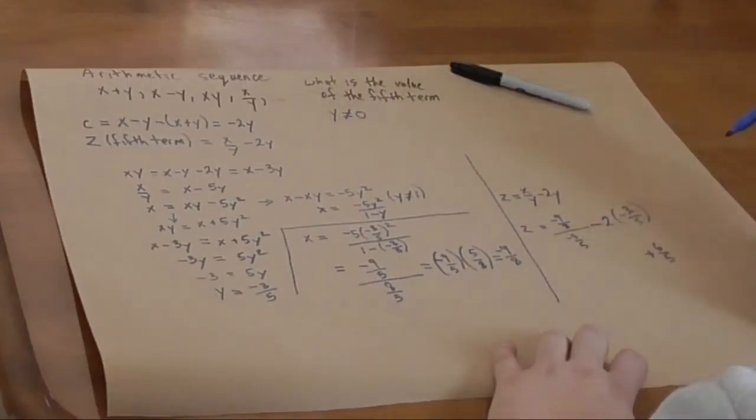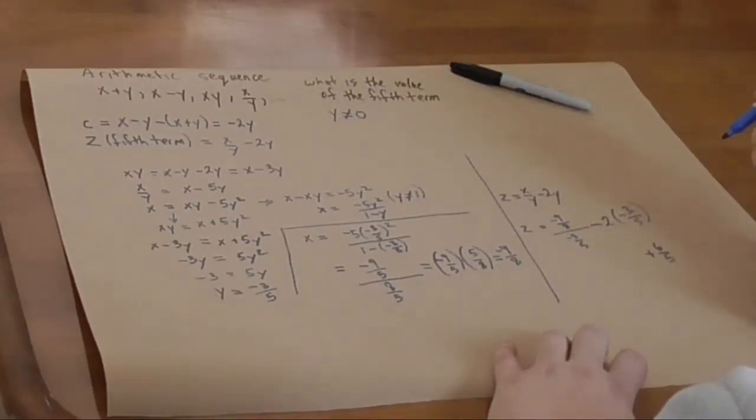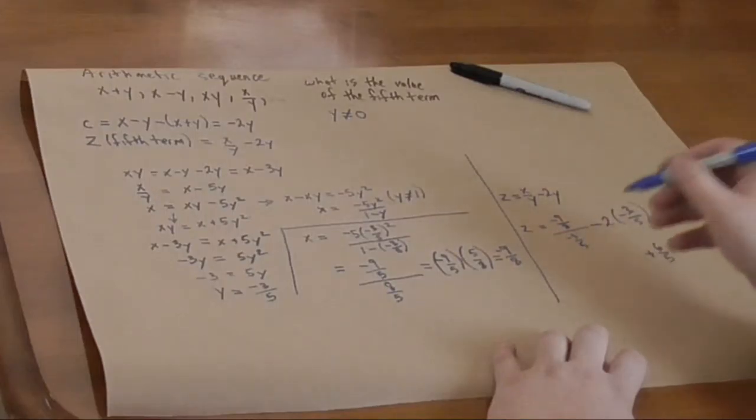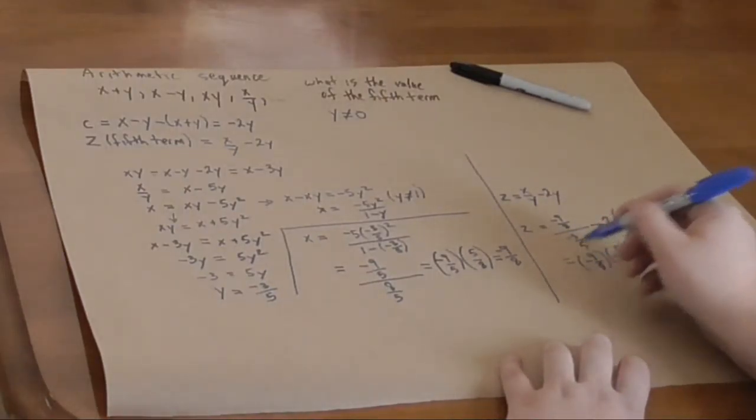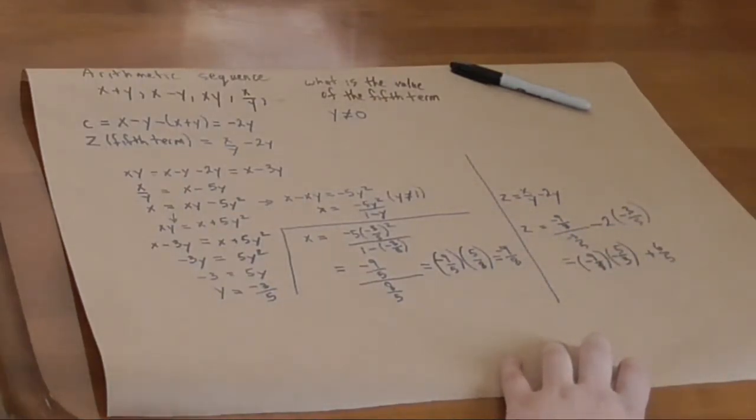This, again, we're multiplying by the reciprocal. So, this gives us minus 9 over 8 times minus 5 over 3. And that's still equal to z.